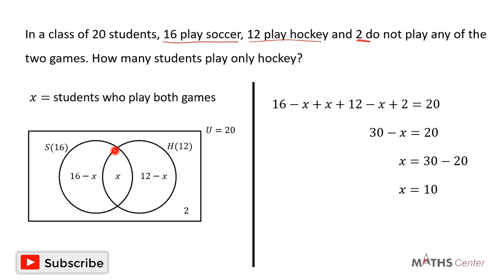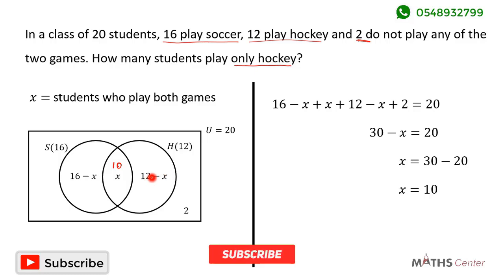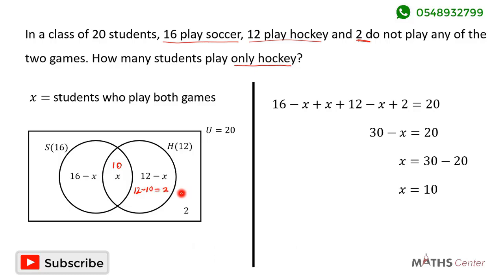So the number of students who play both games is 10. We are looking for the number of students who play only hockey. From our Venn diagram, that is 12 minus X, and since X equals 10, it is 12 minus 10, which gives us 2. So two students play only hockey.